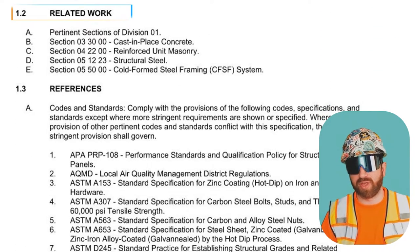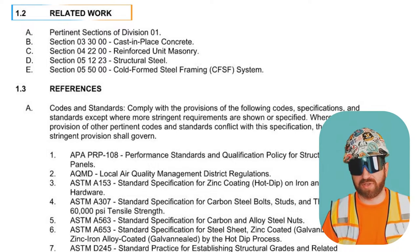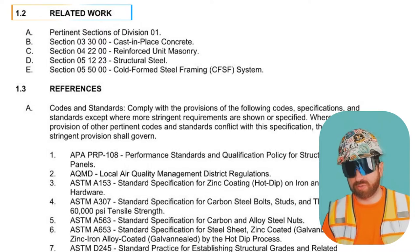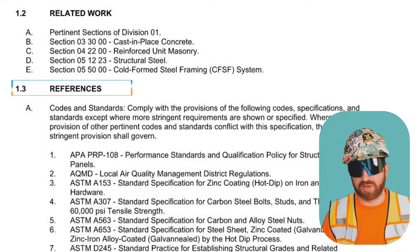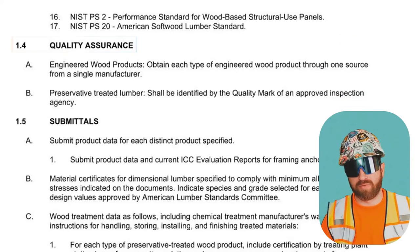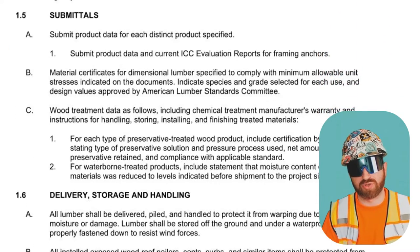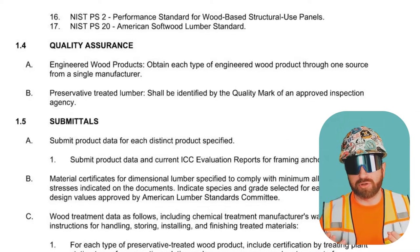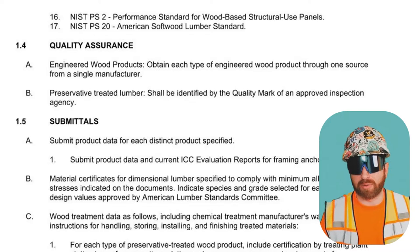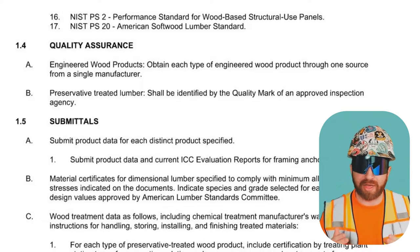Section 1.2 is related work — everything that this specification section might relate to elsewhere in the specification book. Section 1.3 is references — codes and standards. Section 1.4 calls out quality assurance and quality requirements. Section 1.5 is submittals, which can be shop drawings, product data, samples, etc. Material vendors also publish their specifications for their products on their website so that architects can reference them if they want to use the material on that project.